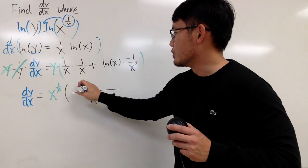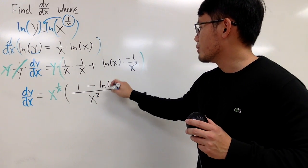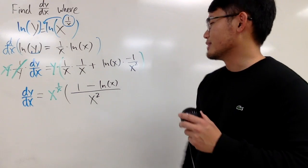From the first term, we have 1 times 1, which is 1. From the second term, we have minus natural log of x.